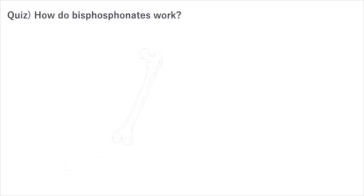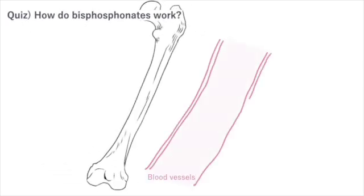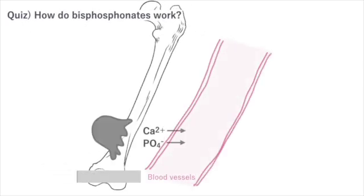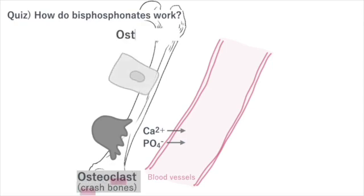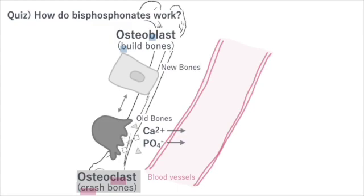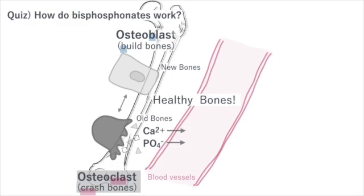First, let's quickly review. Osteoclasts break down bone and osteoblasts build bone. By breaking down old bone and creating new bone, healthy bones are maintained. However, excessive bone breakdown can lead to the development of osteoporosis.